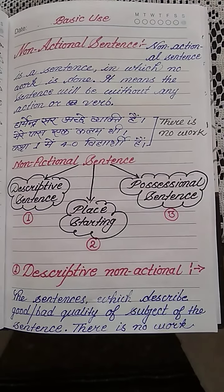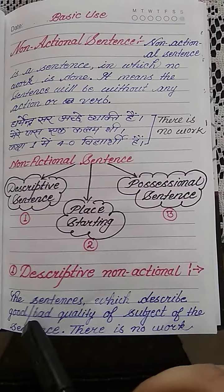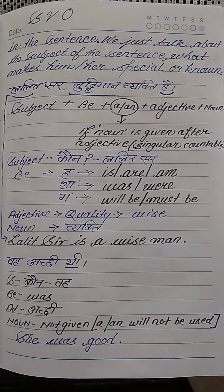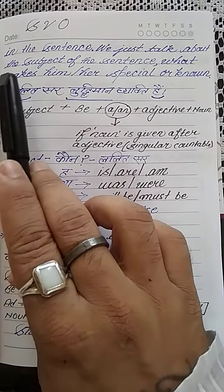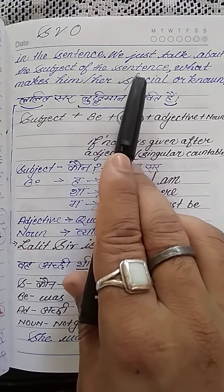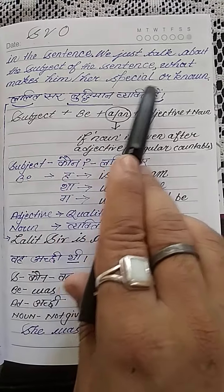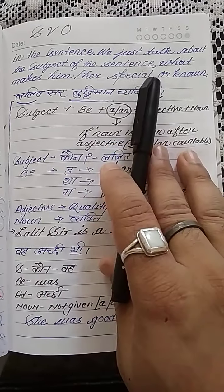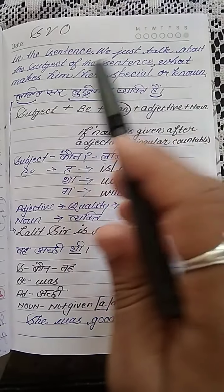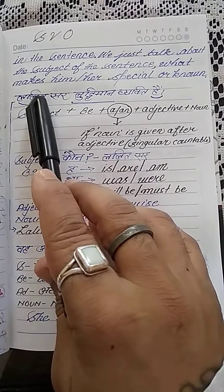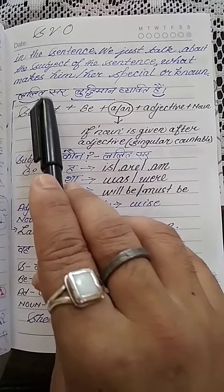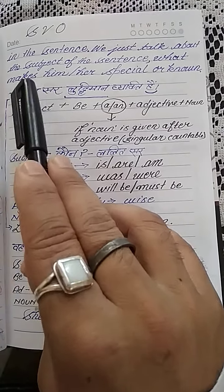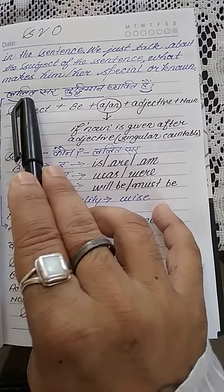So what are descriptive non-action sentences? These are sentences which describe the good or bad quality of the subject of the sentence. There is no work in the sentence — we just talk about the subject and what makes him or her special or known to us. Descriptive sentences are those which usually talk about the quality of the subject; the speaker talks about somebody and about his quality which makes him very special.